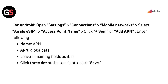Select the AirLo eSIM access point name. Click the plus sign or Add APN. Enter the name as 'APN' and the APN value as 'global data'. Leave the remaining fields as they are. Click the three dots at the top right and then click Save.